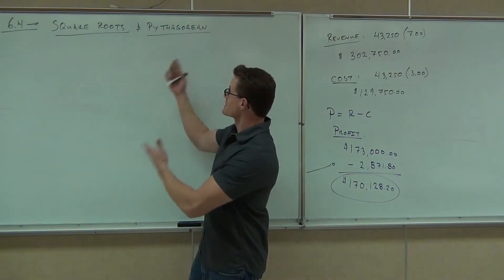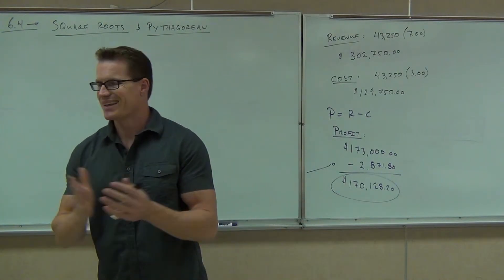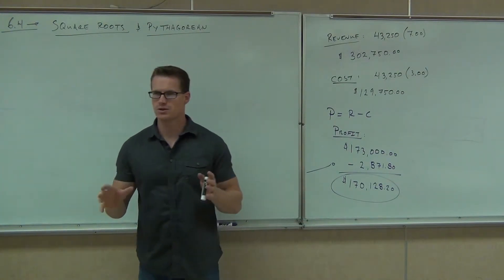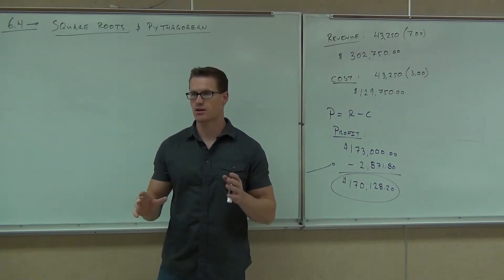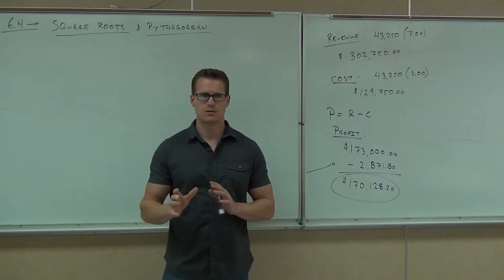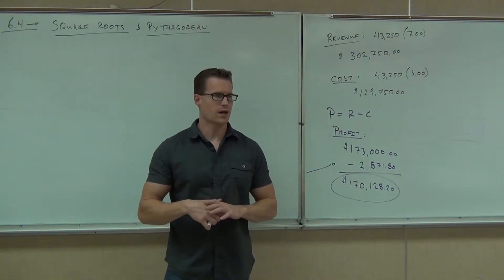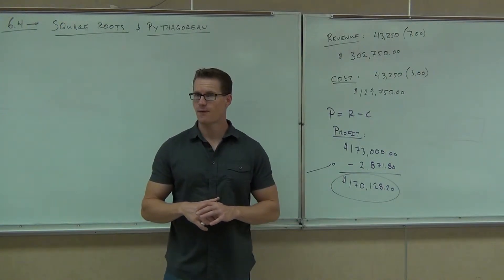So anyhow, this guy, Pythagoras, and the Pythagorean guys invented this really unique formula that deals with a right triangle. You guys have heard of a triangle before, right? How many sides does a triangle have? Three. What's a right triangle mean? One of the angles is 90 degrees. Can you have a triangle with two 90-degree angles? No.